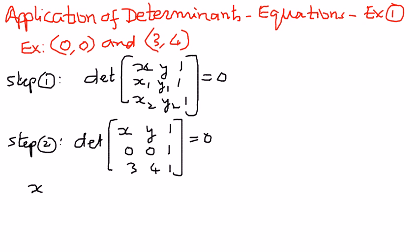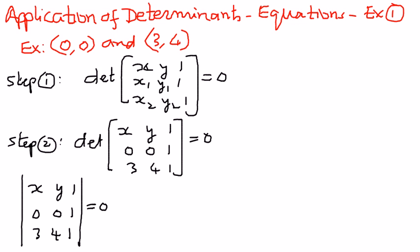We need to find the determinant of the matrix [x, y, 1], [0, 0, 1], [3, 4, 1] and equate that to 0. If we expand along the first row, and according to the sign convention, the first row elements alternate as positive, negative, and positive. Following that sequence, we are going to expand this determinant as follows.